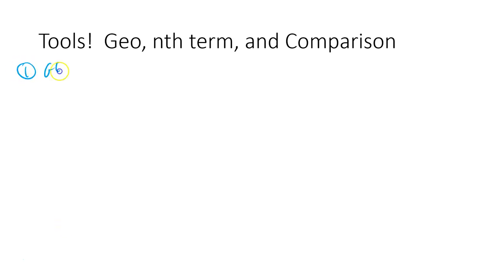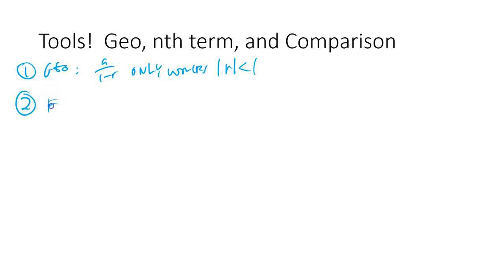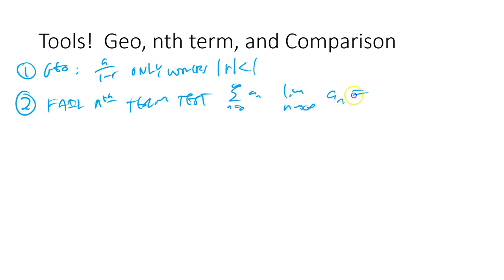So now, how do we figure out which possibility we're in? We need some more tools. The first tool is geometric: if you have A over (1 minus r), that only works if |r| is less than 1 — don't forget that. So if you see something in that fraction form, always think of it in terms of geometric series. The second tool is the nth term test: if you have a sum from n equals 0 to infinity of a_n, and the limit as n approaches infinity of a_n is not 0, then it diverges, because you're adding terms that aren't close to 0.